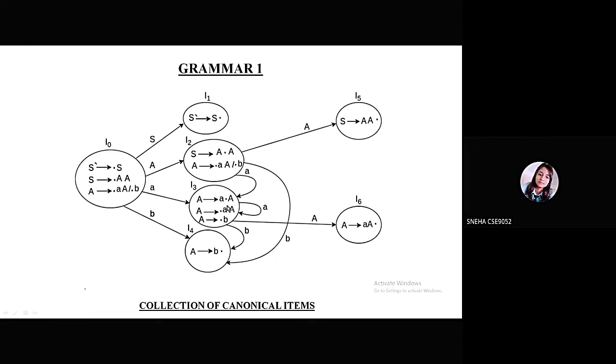The same thing happens for I3, and since it is already present, we will make a self-loop. For the production A, it will go to I6, and since there is no terminal or non-terminal, it is an end node. This is how we are forming the canonical item set for this particular grammar.